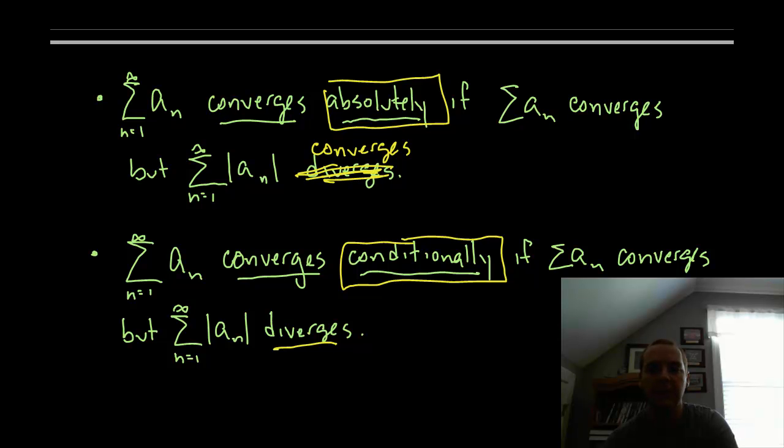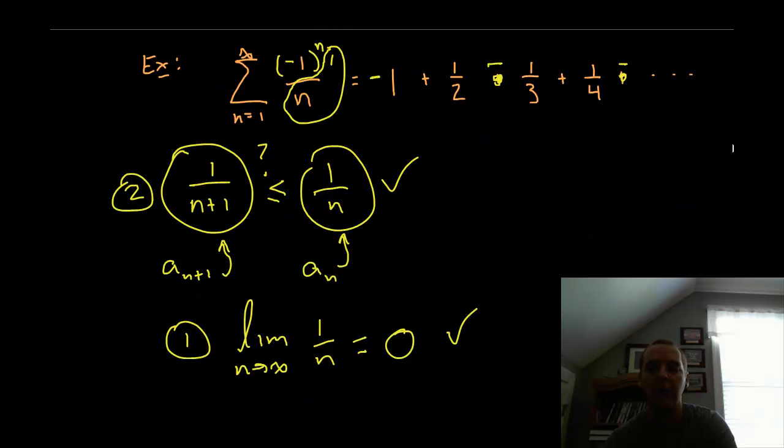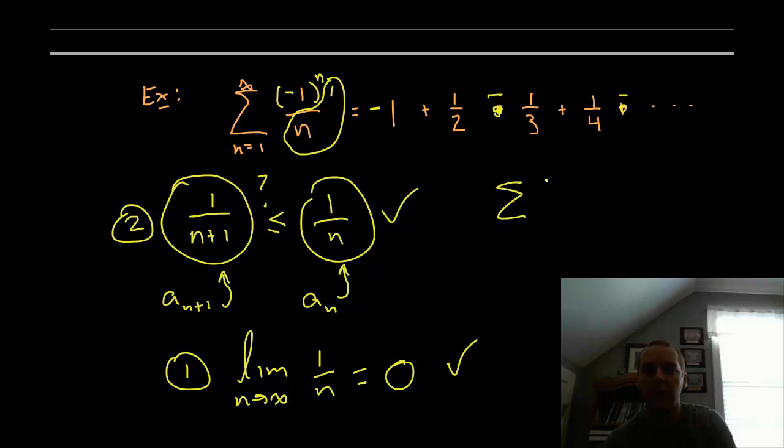So let's look back at this example we've already finished. If you had negative one to the n over n, that converges. But if you took the absolute value of these terms well you'd still have over n that would stay the same but the minus one to the n would turn to a one and that diverges. So if it originally converges but when you put absolute value bars around it it now diverges, we say this series converges conditionally, it needs that help, it needs that assistance.